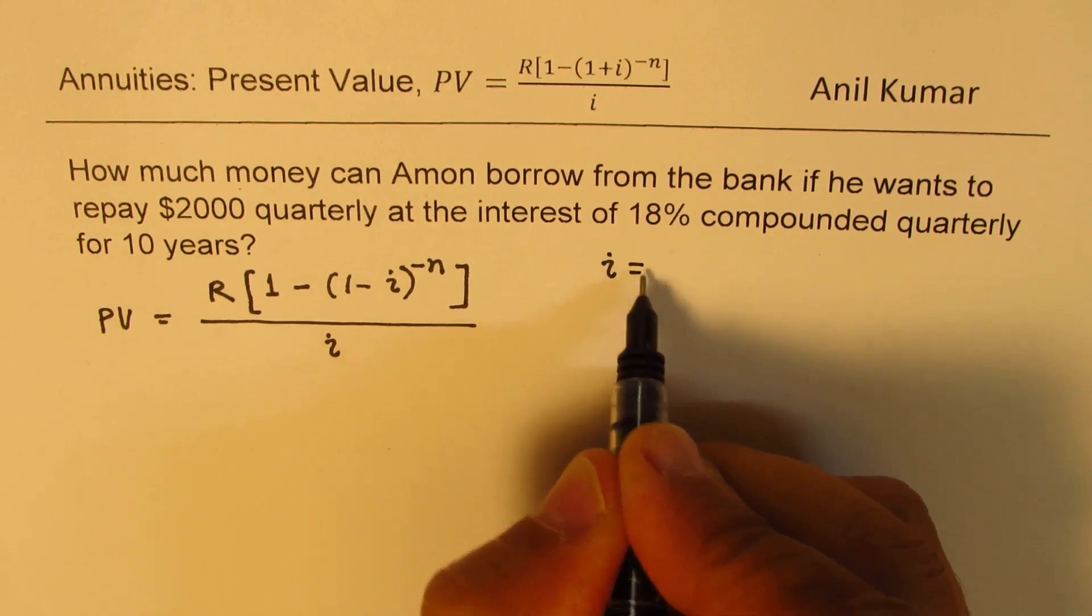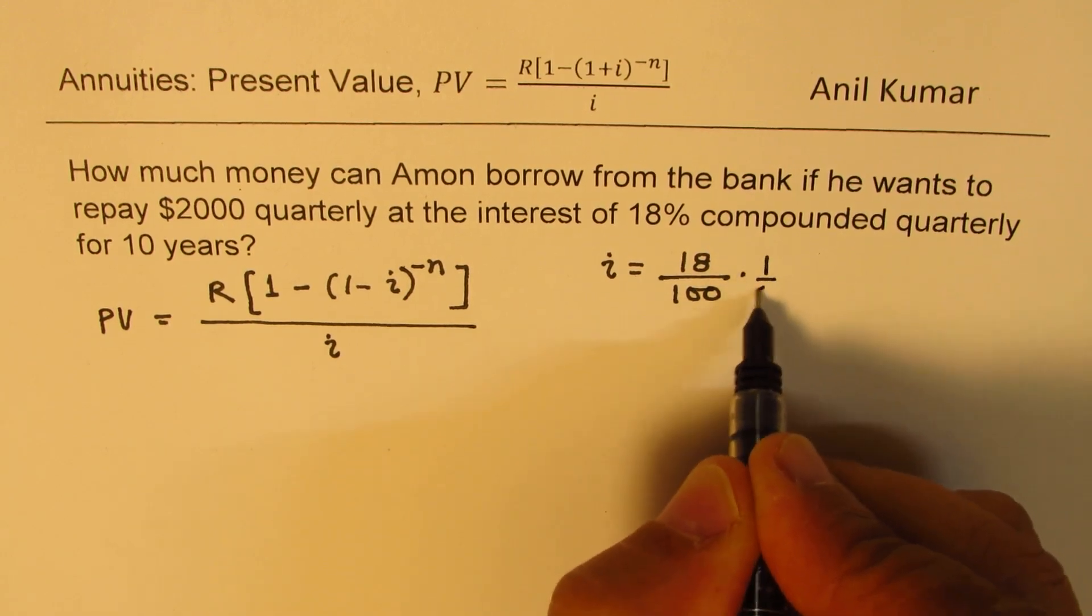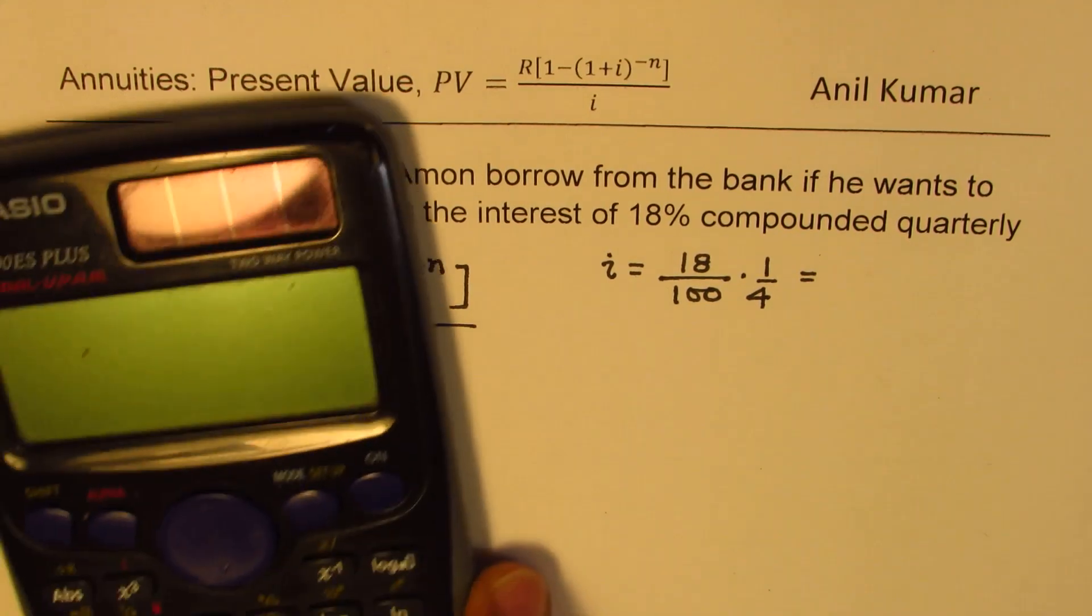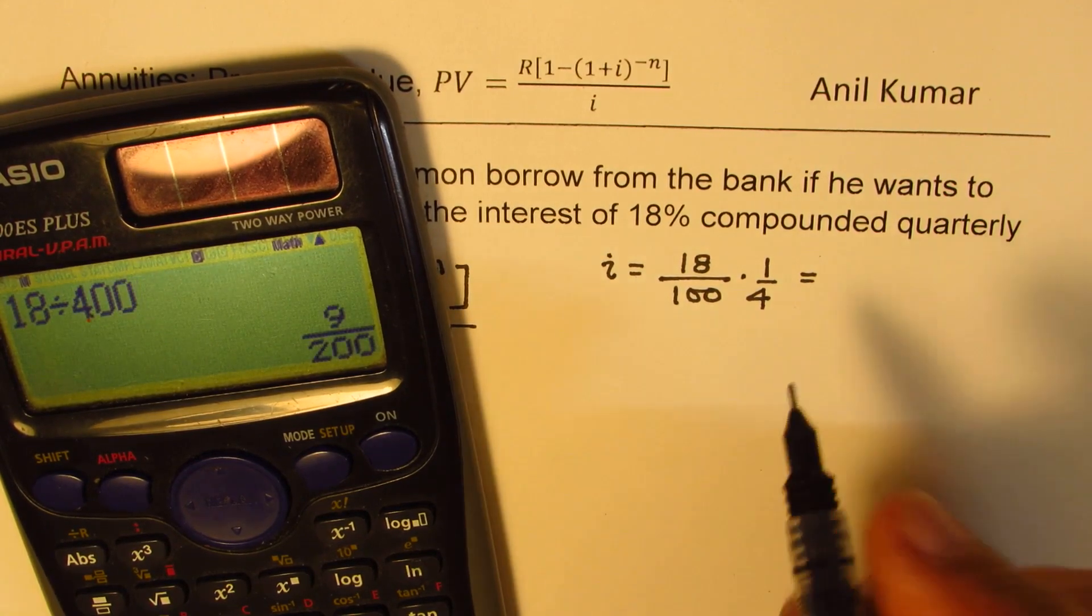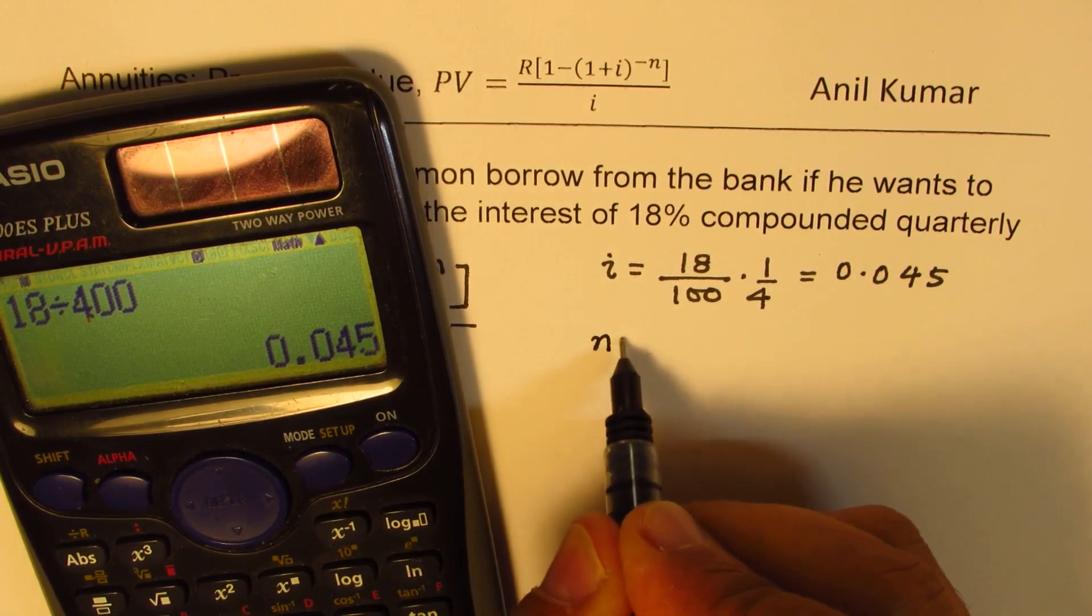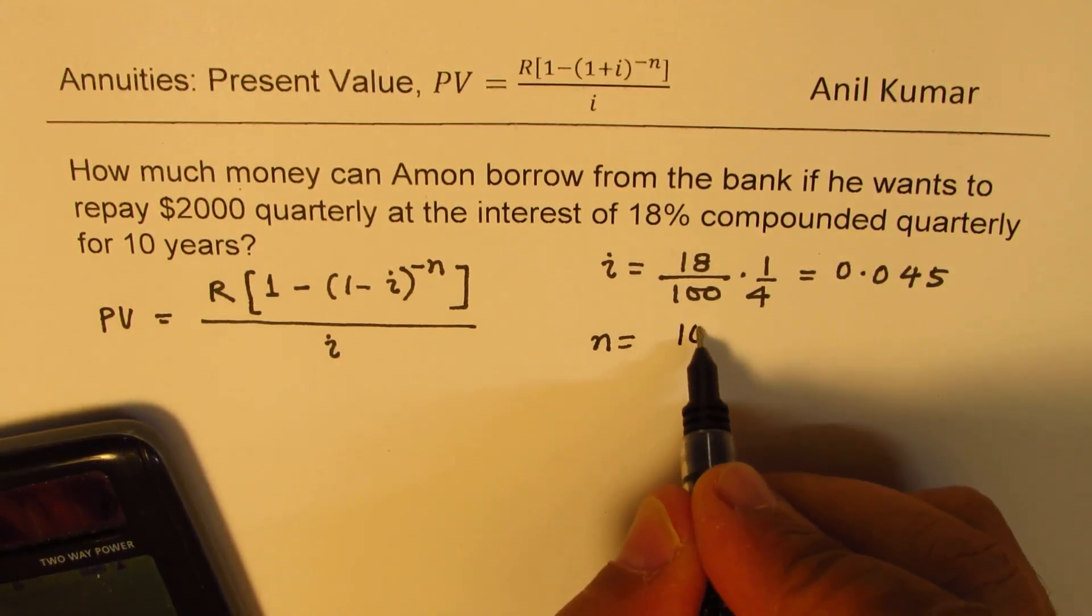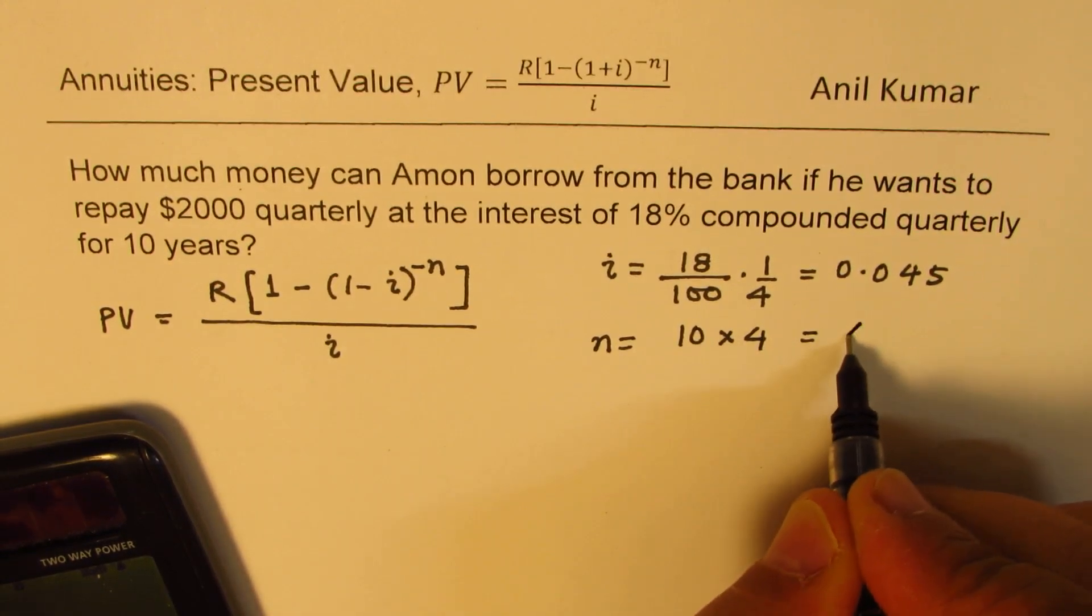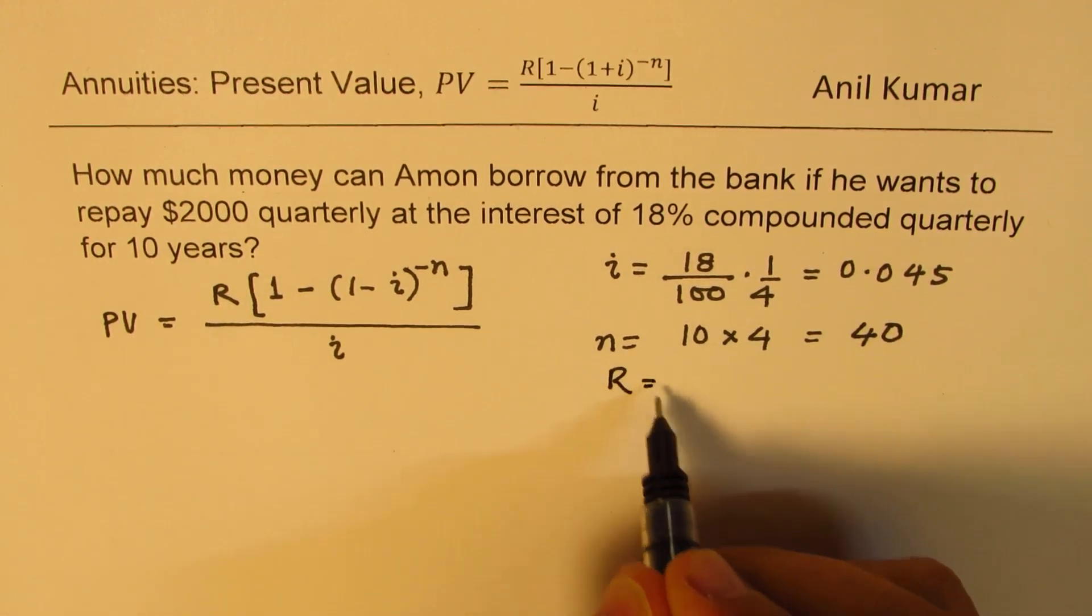So let me calculate these values. i will be 18% means 18 over 100, that is 18%. Quarterly means one-fourth. So it is 18 divided by 400 in decimals, which is 0.045. n, the compounding period, we are given 10 years, so 10 years times 4, because every year quarterly means 4 times, so n value is 40. R is given to us as equal to 2,000.